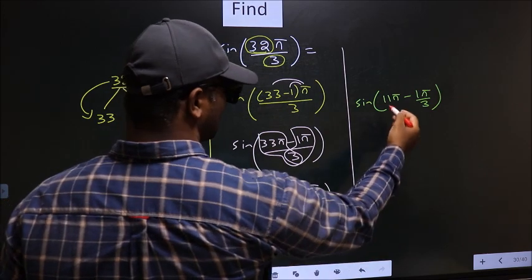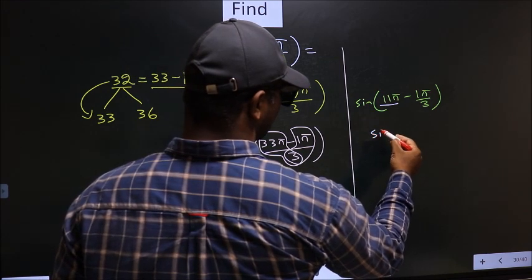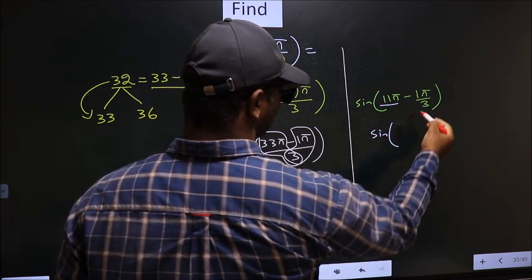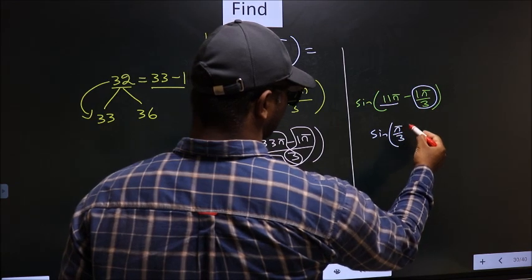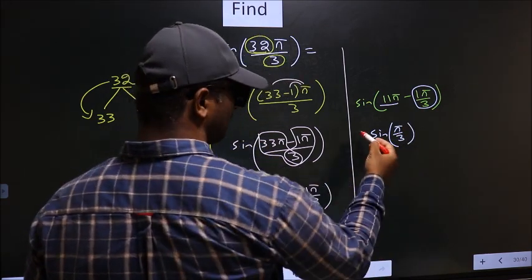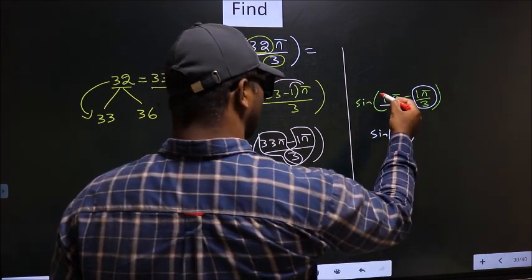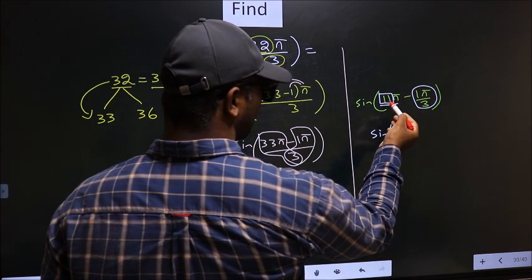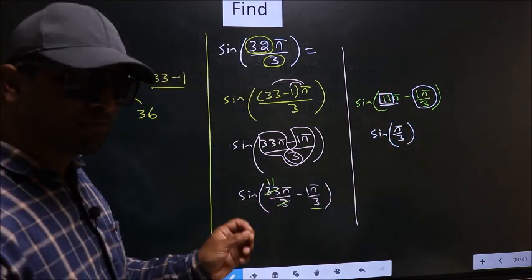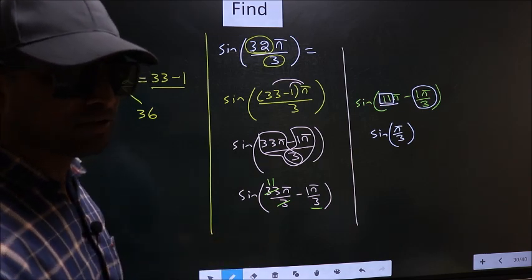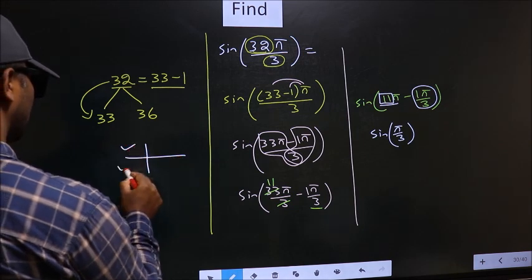Now here we have multiple of π, so sin will remain sin only. Sin of this angle we get π by 3. Now the only question arises, will we get positive here or negative? To answer that, you look at this number. Here we have 11, which is odd. For every odd multiple of π, the angle lies either in the second or in the third quadrant.